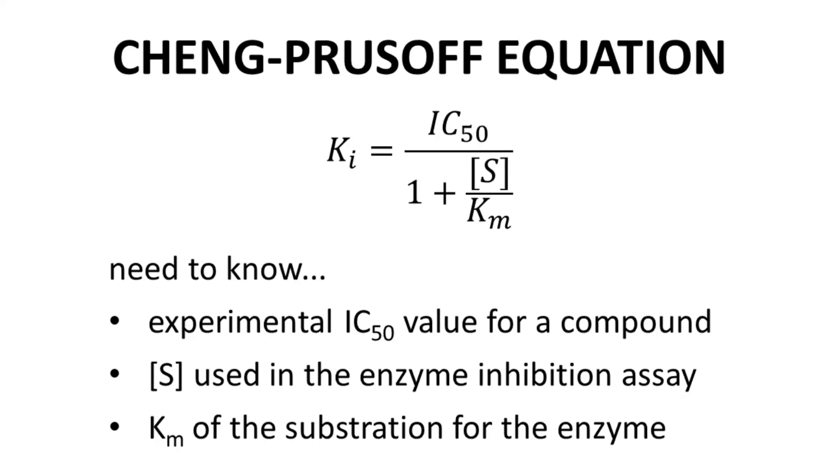Through this equation, IC50 values can be converted to KI values, which can then be compared to KI values of other compounds to determine which inhibitors are the most potent.